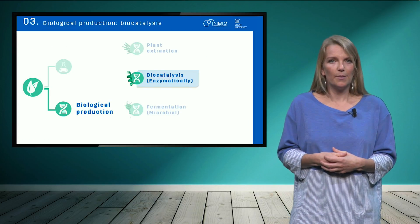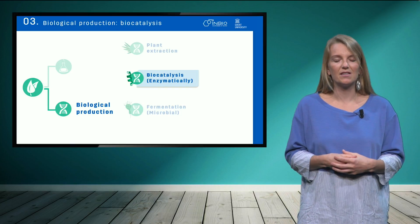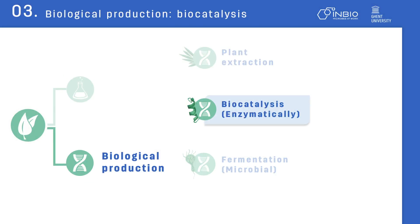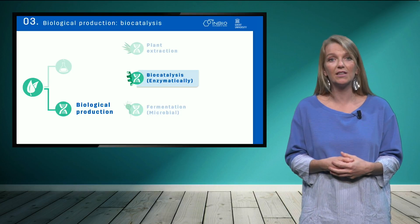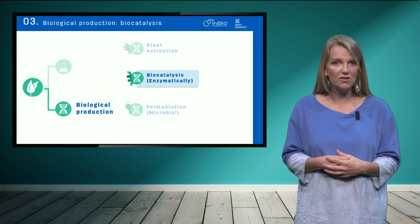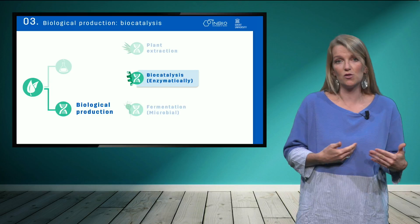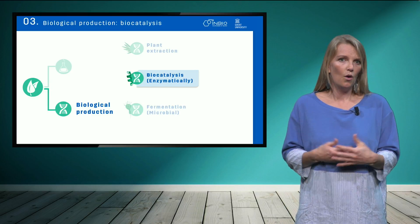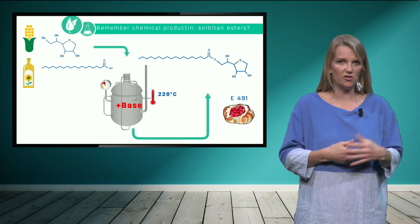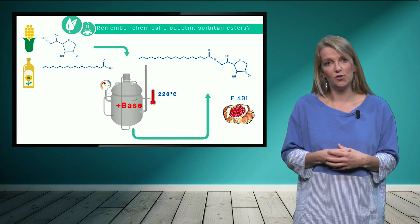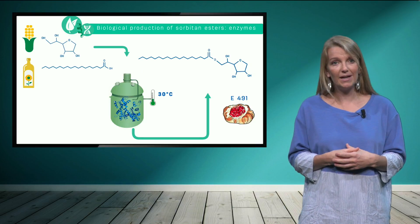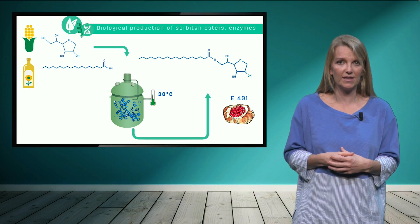Another way to produce biosurfactants through a biological production process is by using enzymes, thus applying so-called biocatalysis. Although there are very few examples of biosurfactants currently on the market produced through biocatalysis, there is a big interest from the industry to develop such methods, and a lot of research effort in this respect. You can imagine the production of the chemically produced biosurfactant SPANS, which I described before, to also be possible through the reaction of enzymes in a bioreactor. This would have a positive impact on the environmental impact of the production of such biosurfactants.